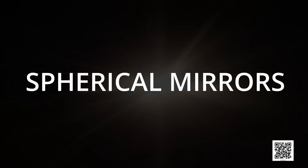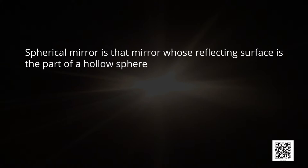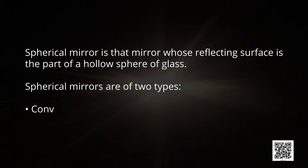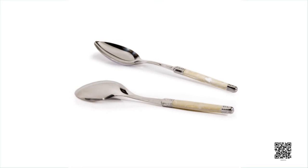Now let's discuss about spherical mirrors. A spherical mirror is a mirror whose reflecting surface is the part of a hollow sphere of glass. Spherical mirrors are of two types: convex mirrors and concave mirrors. Let's understand them with the help of an activity. Children, take a big shining steel spoon. Its inward surface acts as a concave mirror, whereas its back bulging surface acts as a convex mirror.